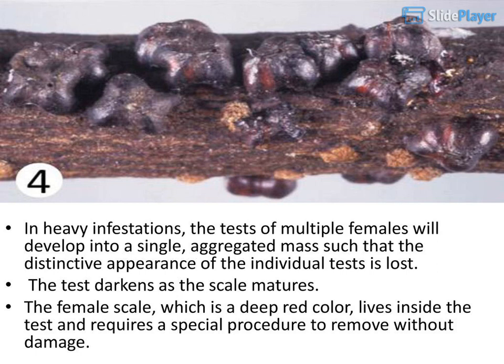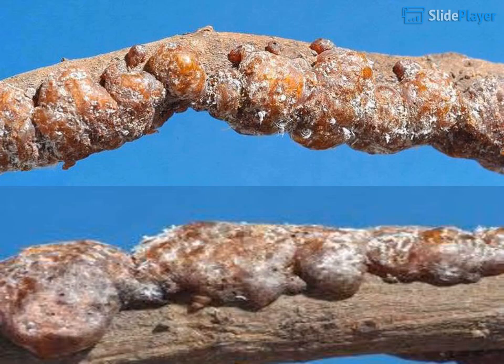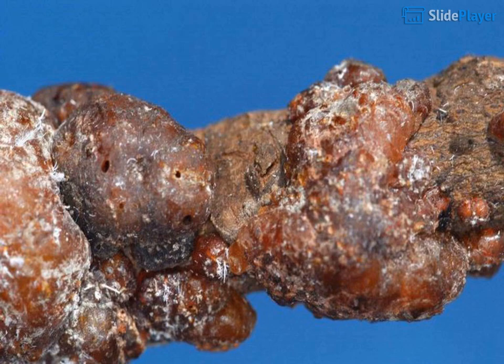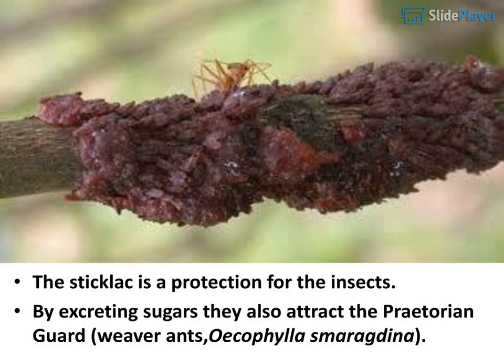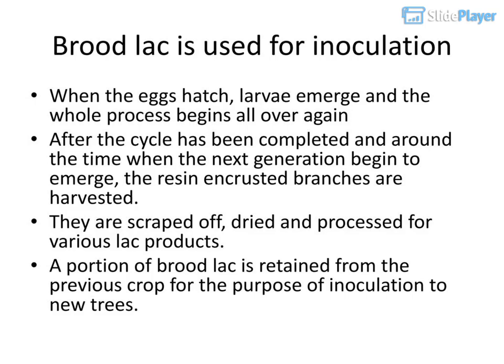The test darkens as the scale matures. The female scale, which is a deep red color, lies inside the test and requires a special procedure to remove without damage. The stick-lac structure serves as protection for the insects. By excreting sugars they also attract the weaver ant Oecophylla smaragdina as a praetorian guard. Brood lac is used for inoculation. When the eggs hatch, larvae emerge and the whole process begins again. After the cycle is completed and around the time when the next generation begins to emerge, the resin-encrusted branches are harvested, scraped off, dried, and processed for various lac products.